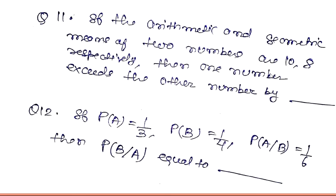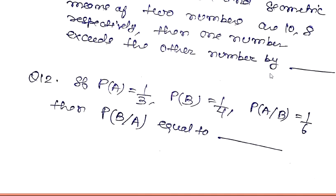Question number twelve: if the probability of A is 1/3 and probability of B is 1/4, and the probability of A given B is 1/6, then the probability of B given A equals blank.